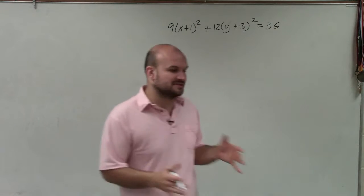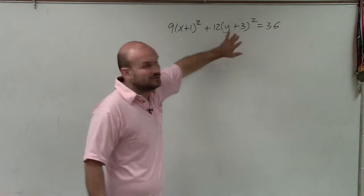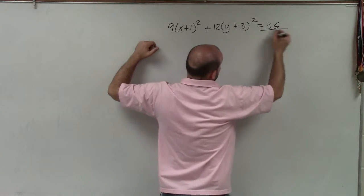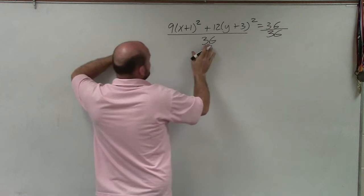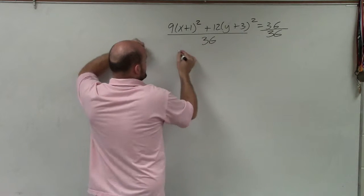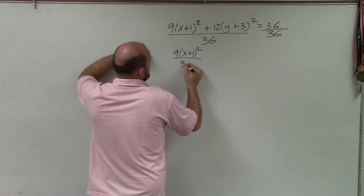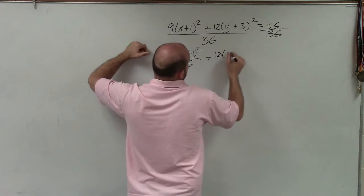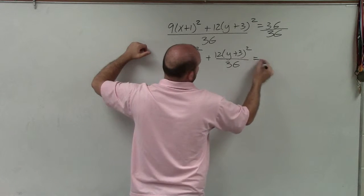One thing we notice about those standard equations is they're always equal to 1. So the first thing I want to do is set this equation equal to 1. To do that, I'm going to divide by 36. And remember, when you're dividing by 36, the 36 divides into both these terms. So therefore, I have 9(x+1)²/36 plus 12(y+3)²/36 equals 1.